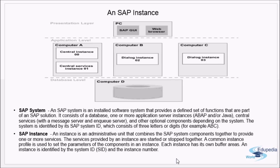A common instance profile is used to set parameters for the components in an instance. Each instance has its own buffer areas and is identified by the system ID and the instance number. For example, if DC0 is the SAP system, you can have instance 00 or 01, making the full identifier DC001 or DC002. An SAP instance is always a subset of an SAP system; one SAP system can have one or more instances.